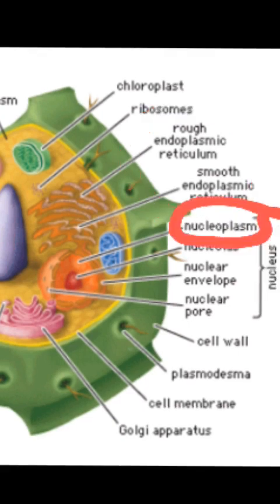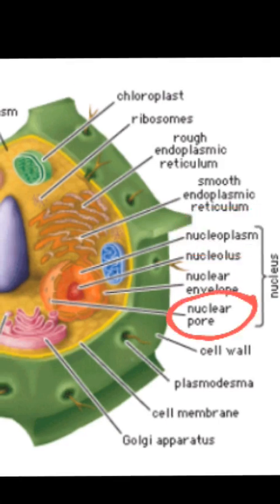Nucleoplasm is a thick fluid involved in synthesis for ribosomes, and we have so much more to go. You look at a part of the cell and say, what is that for? Nuclear pore — that circled structure is a nuclear pore that regulates a specific passageway between the cytoplasm and the nucleus.